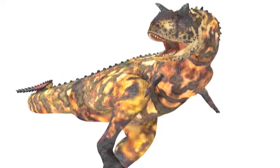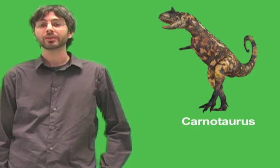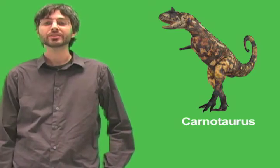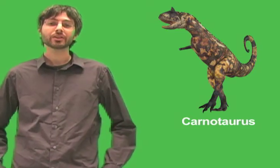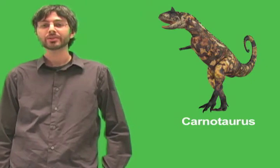Scientists who study dinosaurs aren't sure what purpose the horns served. It's possible they were used for display as a way of attracting mates. It's also possible they were used in fights with other Carnotauruses. The dinosaurs may have battered each other much as modern rams do, though it's not clear that their skulls were strong enough to withstand such behavior.